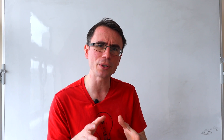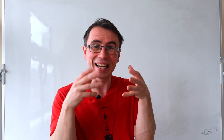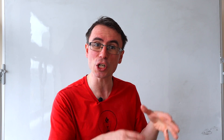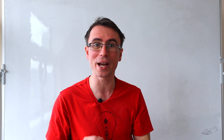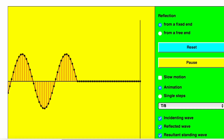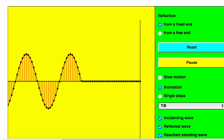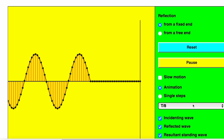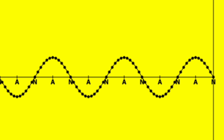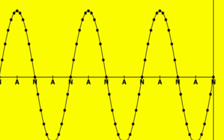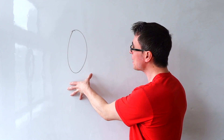A key difference between a stationary and a progressive wave is that all points on a progressive wave will have the same amplitude, whereas in a stationary wave the amplitude varies with position.